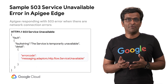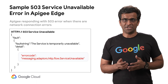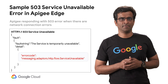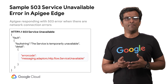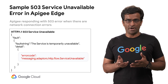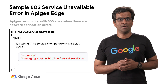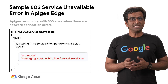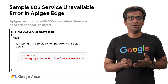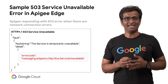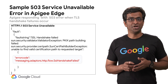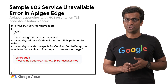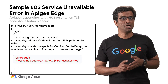Here is another example of a 503 Service Unavailable Error. This error message is typically observed when APG Edge fails to establish a network connection with the back-end service. If the network connection cannot be established with the back-end service within the configured connection timeout period, then a 503 error is returned by APG Edge itself. The default value of the connection timeout period is 3 seconds in APG Edge. Notice that APG sets the error or fault code as messaging.adapters.http.flow.serviceUnavailable in this case.